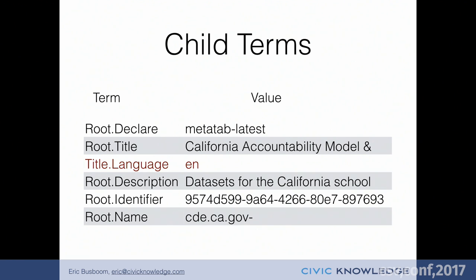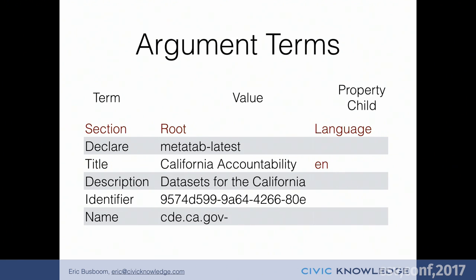We've only used the first two columns so far, but there's all this other column space that should be useful. We can use it by specifying a property child in the third column. The first thing we do is add a section — there's always an implicit one called root. The section term declares a section, and everything from column C onward is a list of arguments that tell the parser what the subsequent terms will produce. So we can create a title, a root.title term, give it a value, and then create a title.language property with the value 'en'.